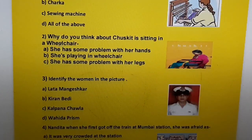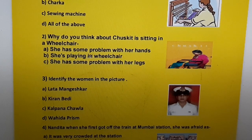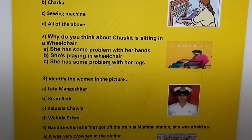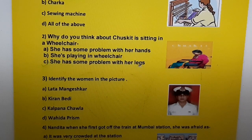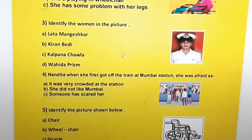Question two: Why do you think Chuskit is sitting in a wheelchair? a) She has some problem with her hands, b) she is playing in a wheelchair, c) she has some problem with her legs. The correct answer is c) she has some problem with her legs.